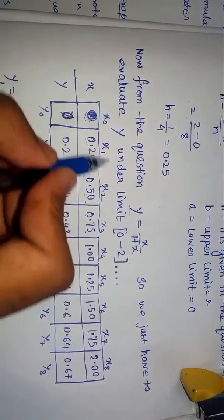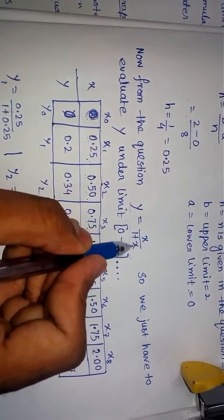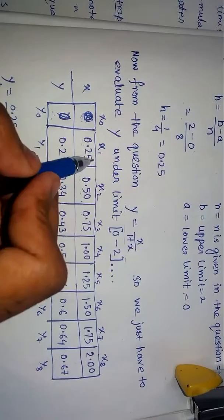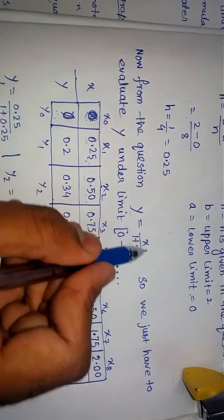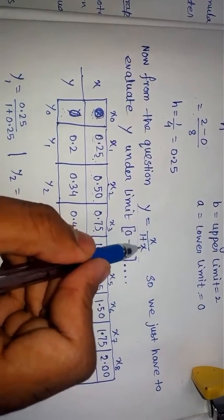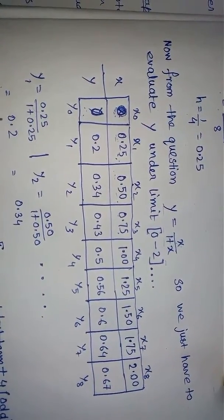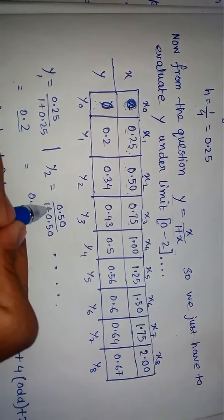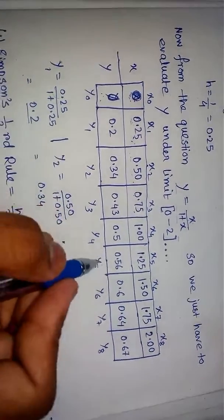Here, y equals x/(1+x). The first value of x is 0, so if I put 0 here, 0/1, it is 0 also, so the value of y₀ is 0. Then I put x equals 0.25, so 0.25 divided by 1 plus 0.25 - that is 0.25/1.25, which gives 0.2.